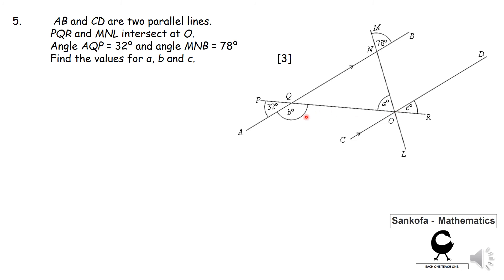Then angle AQP, this little one here is 32 degrees. Angle MNB is 78 degrees. You're supposed to calculate the values of a, b, and c. Have a go.